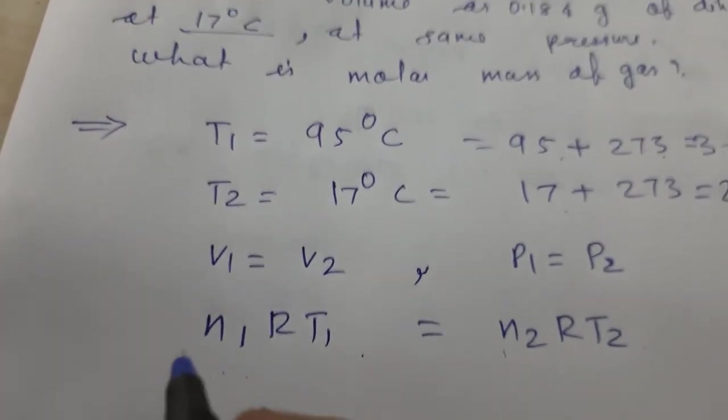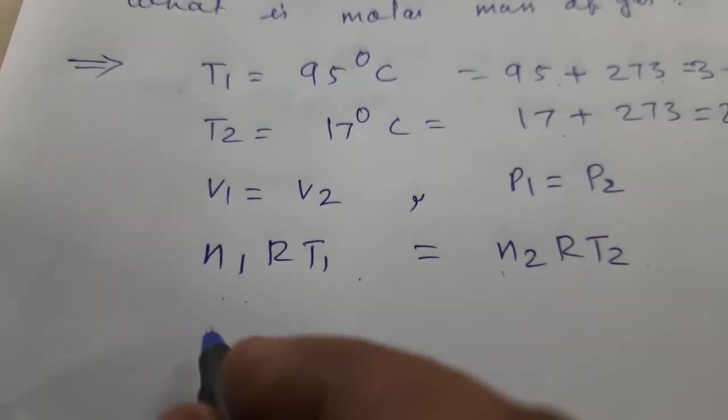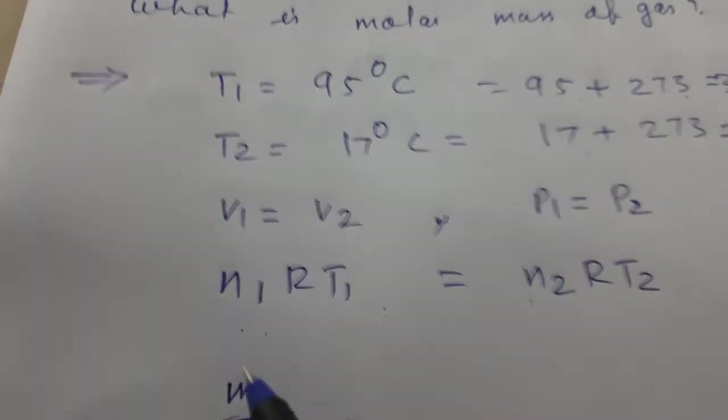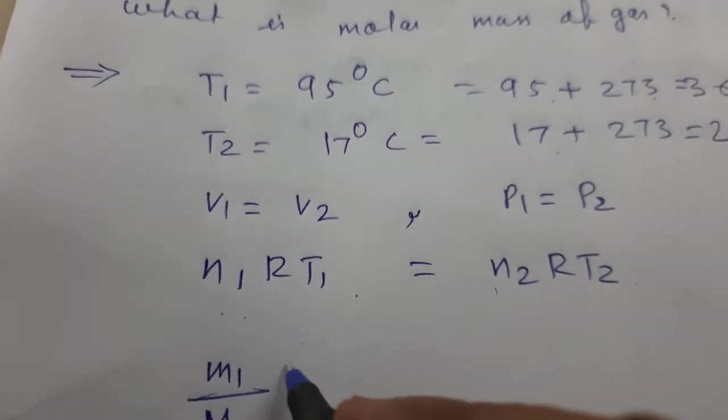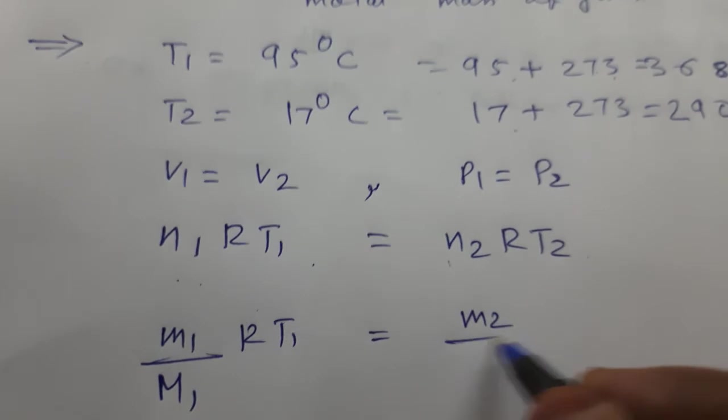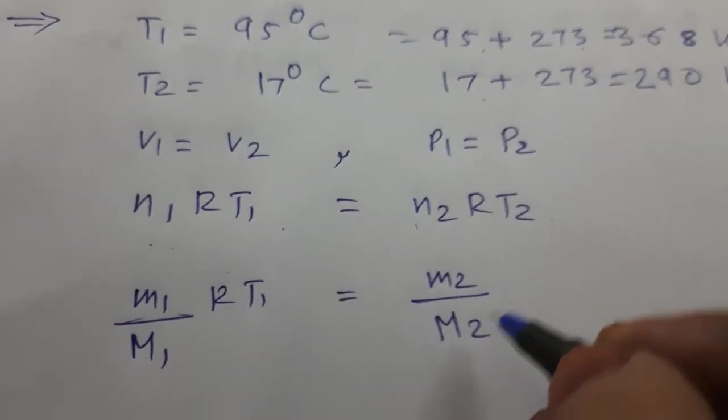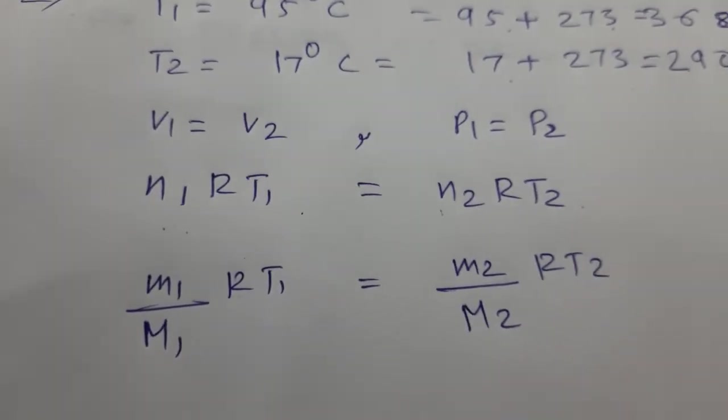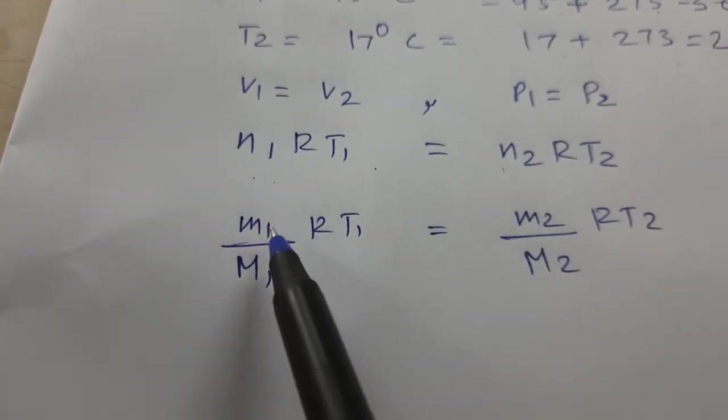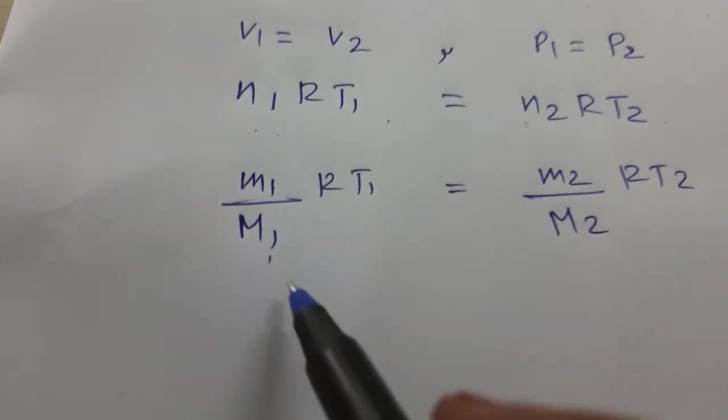Now N1, what is it? Number of moles is equal to small m upon capital M. So small m1 by M1 RT1 equals small m2 by M2 RT2.